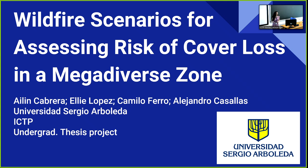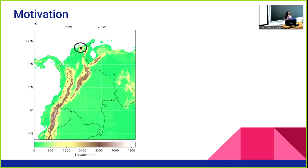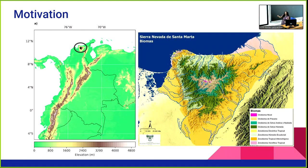Hello, everyone. I want to present my final bachelor's project. It is wildfire scenarios for assessing risk of cover loss in a megadiverse zone. This has been the zone we selected, because it has different important characteristics. We have about eight different ecosystems here, and at the same time, we have a high endemism level. That's one of the reasons why we selected this zone.